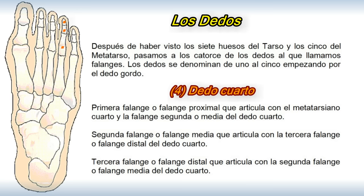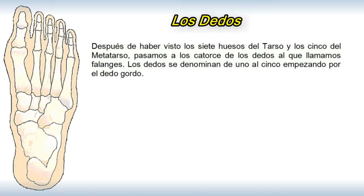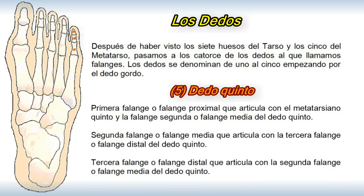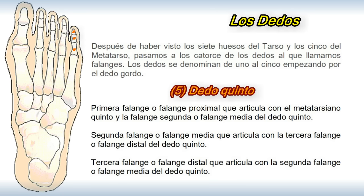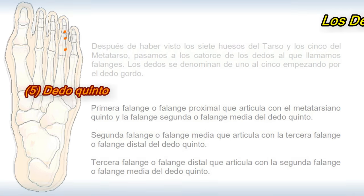Tercera falange o falange distal que articula con la segunda falange o falange media del dedo cuarto. Primera falange o falange proximal que articula con el metatarsiano quinto y la falange media del dedo quinto. Segunda falange o falange media que articula con la tercera falange o falange distal del dedo quinto. Tercera falange o falange distal que articula con la segunda falange o falange media del dedo quinto.